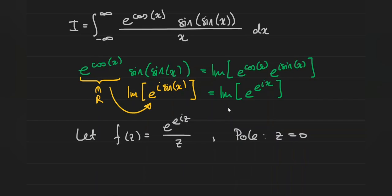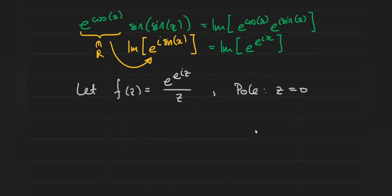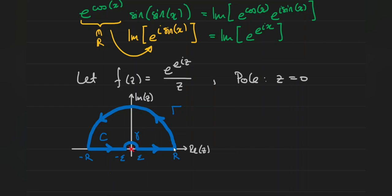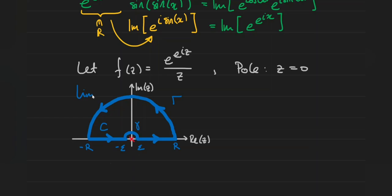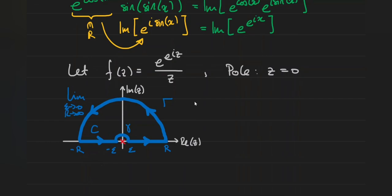So which contour should we use? We want to go from negative infinity to infinity and avoid the pole at z equals zero, so we'll use a semicircular contour with an indent at z equals zero. Along the real axis we go from negative r to negative epsilon, and then epsilon to r, avoiding z equals zero. The idea is to take the limit as epsilon approaches zero and r approaches infinity, so that on the real axis we recover our original interval of integration from negative infinity to infinity.